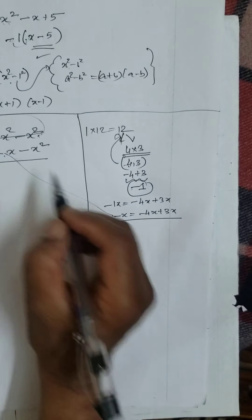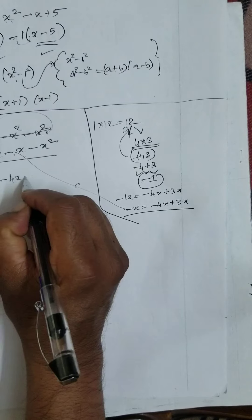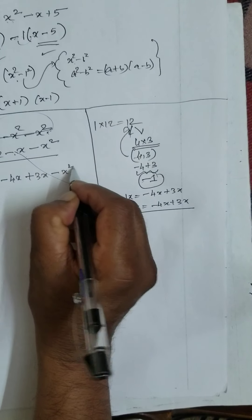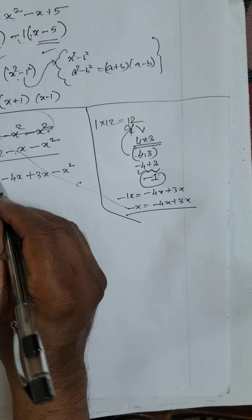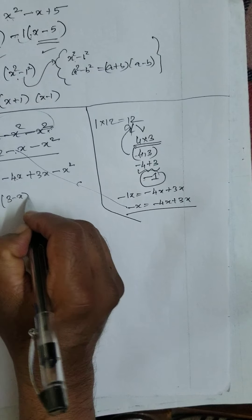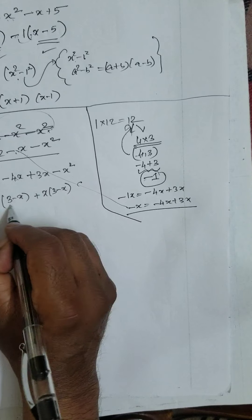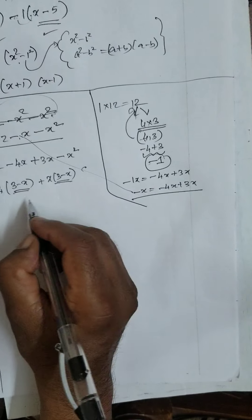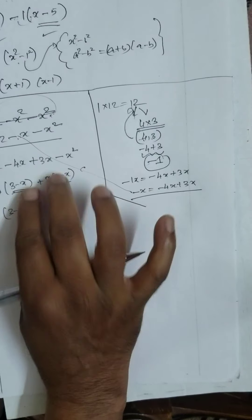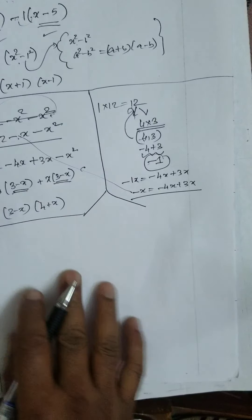Therefore, minus x I am replacing here: 12 minus x can be written as minus 4x plus 3x, minus x². Then 4 I take as common factor: (3 minus x). Here x I take as common: (3 minus x). So 3 minus x is the common factor, and we get (3 minus x)(4 plus x).